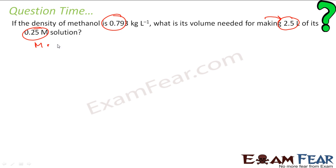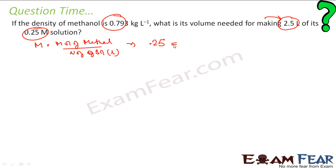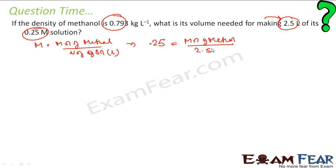Molarity is nothing but moles of methanol by volume of solution in liters. So M is 0.25, which equals moles of methanol by volume of solution. Volume of solution in liters is 2.5 L. So moles of methanol is nothing but 2.5 × 0.25 mol.